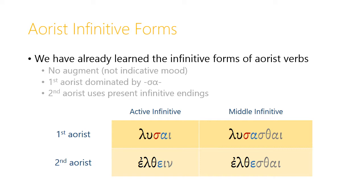We've already learned that aorist infinitives have no augment. In forms like elthane and elthesthai, the epsilon is part of the elth- stem — this is the aorist form of erkhomai. In the indicative mood we add an augment epsilon to the beginning, which lengthens to eta, so here we have elth- with the epsilon shortened back to its normal form.